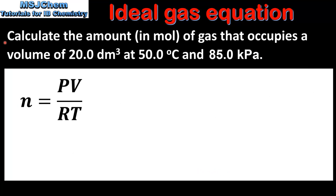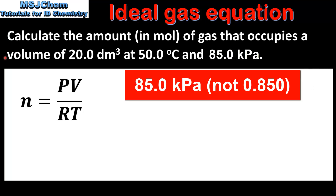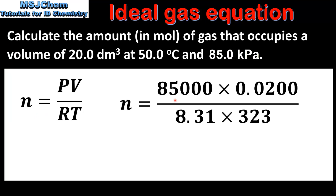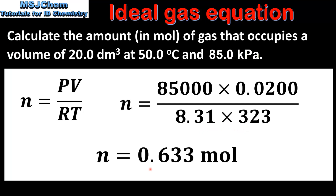In the next example we will calculate the amount in moles of gas that occupies a volume of 20 cubic decimeters at 50 degrees C and 0.850 kilopascals. To calculate the amount in moles we use the moles equation. The pressure in Pascals is 85,000, the volume in cubic meters is 0.02, the universal gas constant is 8.31 joules per kelvin mole, and the temperature in kelvin is 323. This gives us an amount of 0.633 moles.